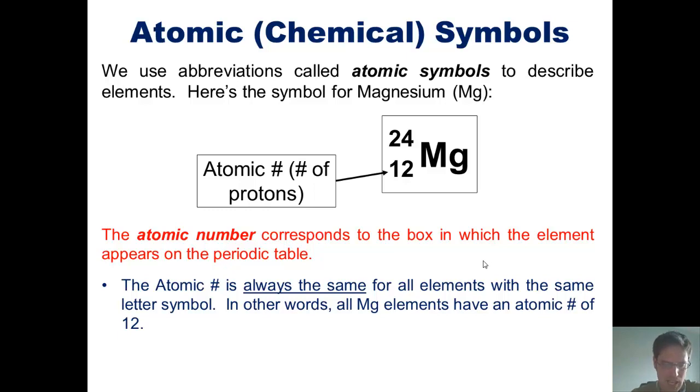The atomic number is always the same for all elements with the same letter symbol. In other words, all magnesium atoms always have an atomic number of 12.